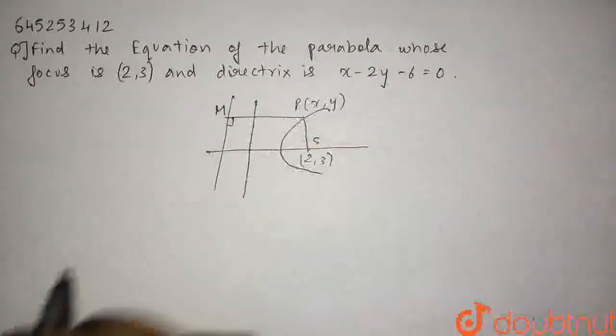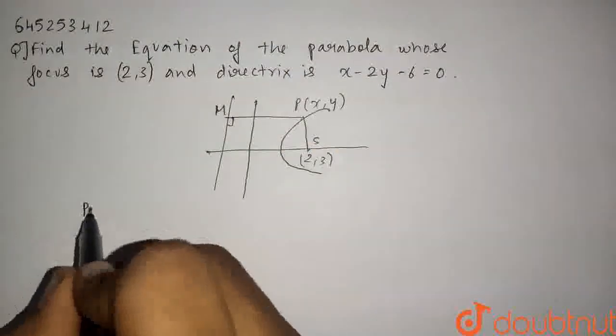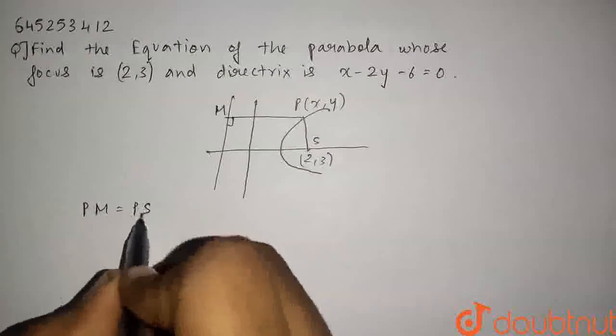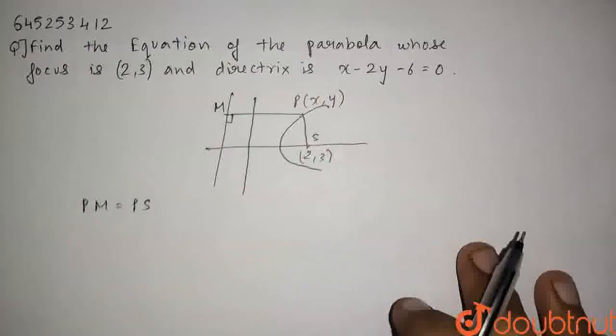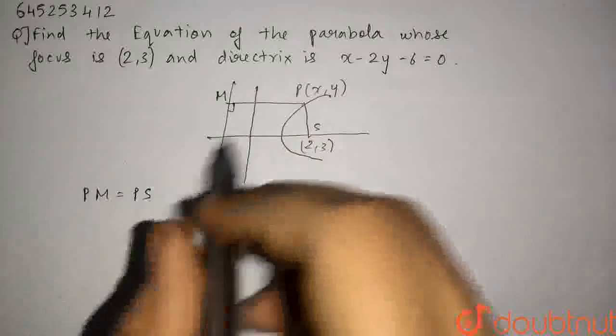This is the distance PM and this is the focus S. For a parabola, PM equals PS - these both distances are equal. What is the value of PM?